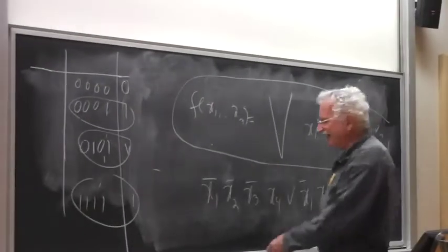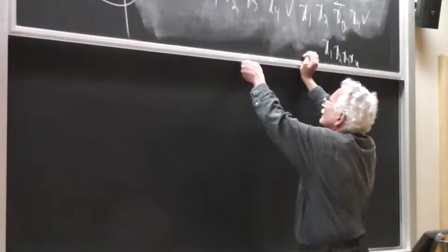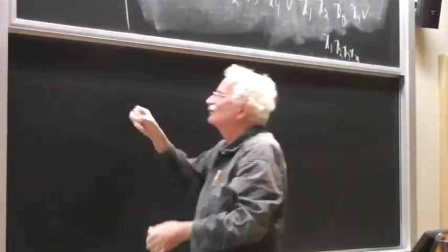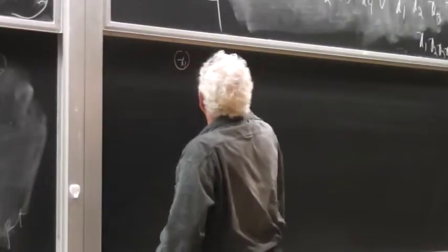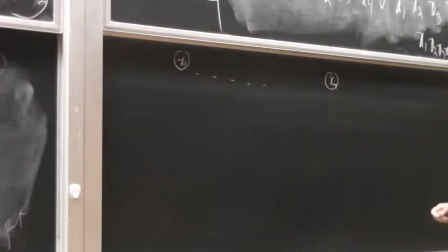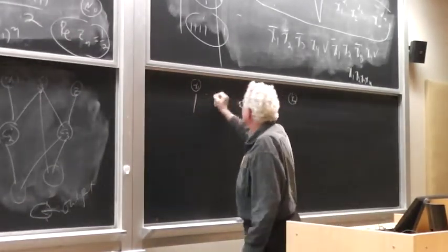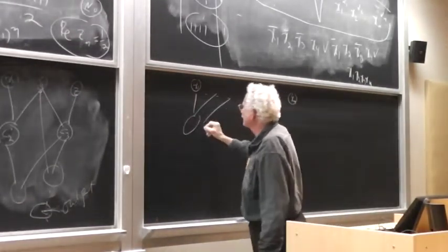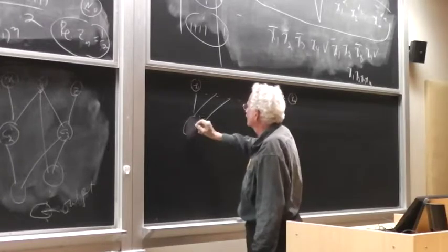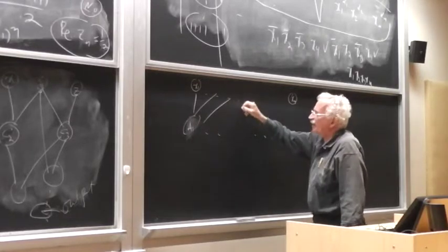For any of the input you can realize it. First row, the input is x1 to xn. Now for every clause you form, there are many clauses. Let's call it A1.